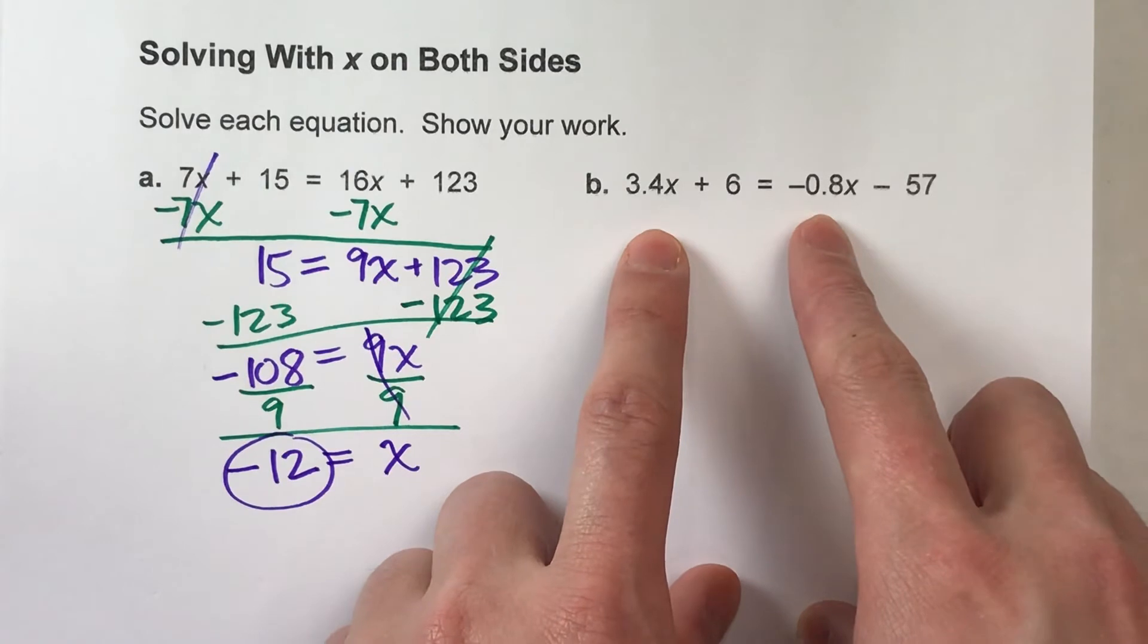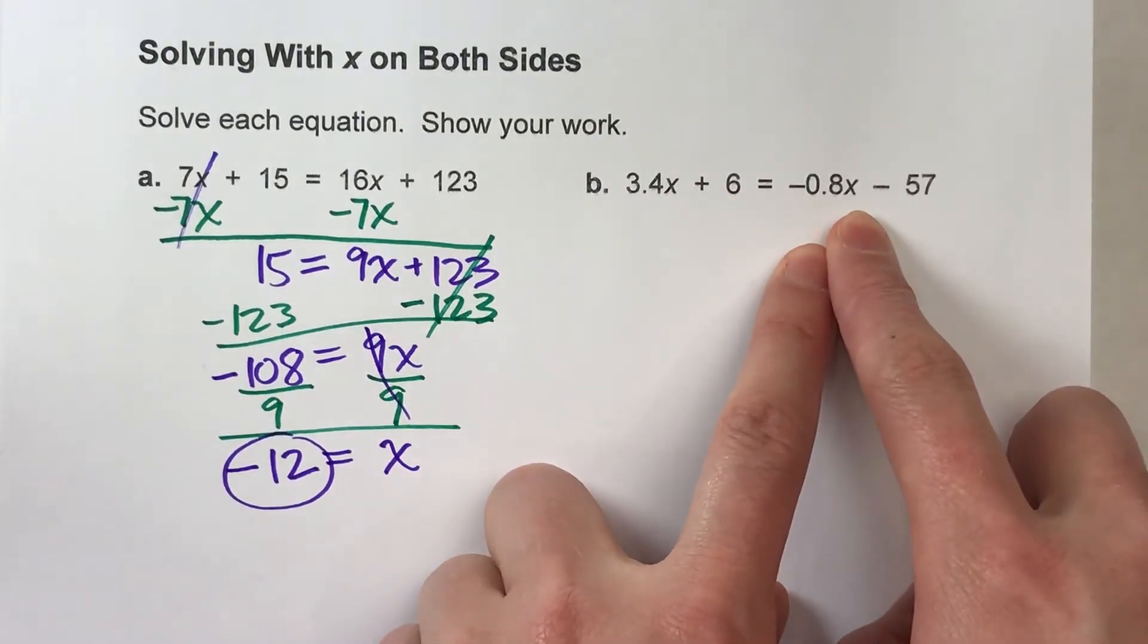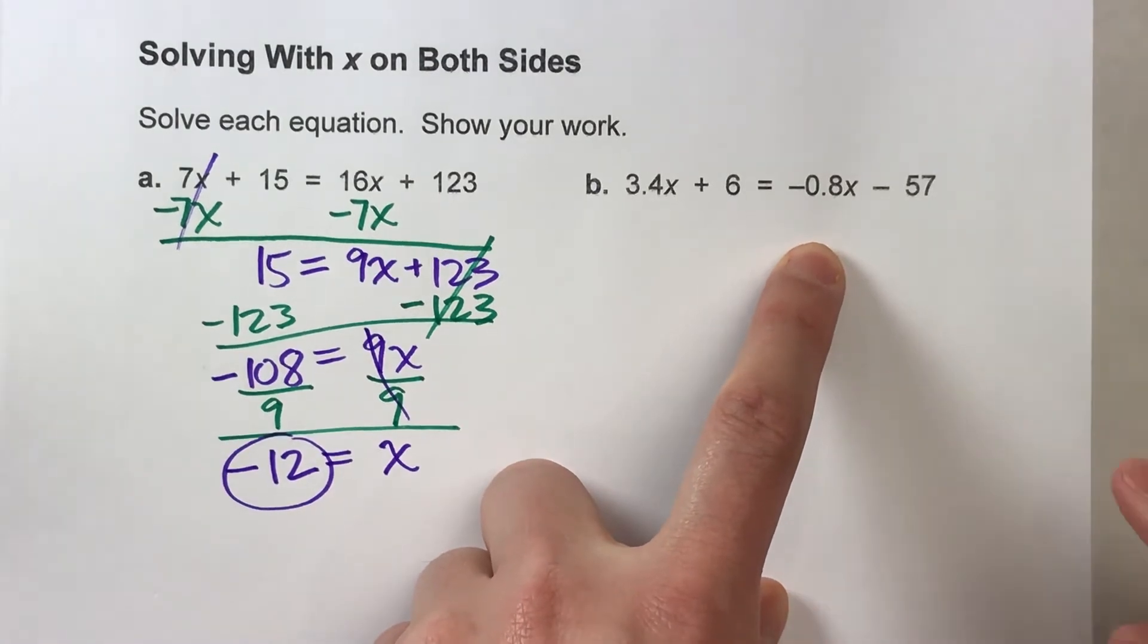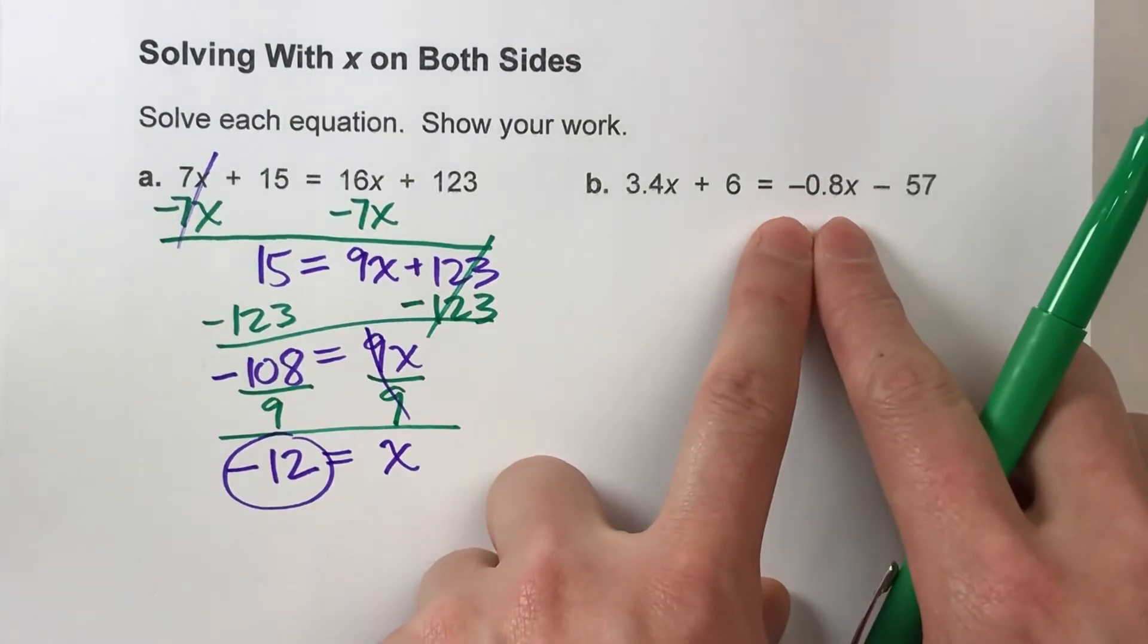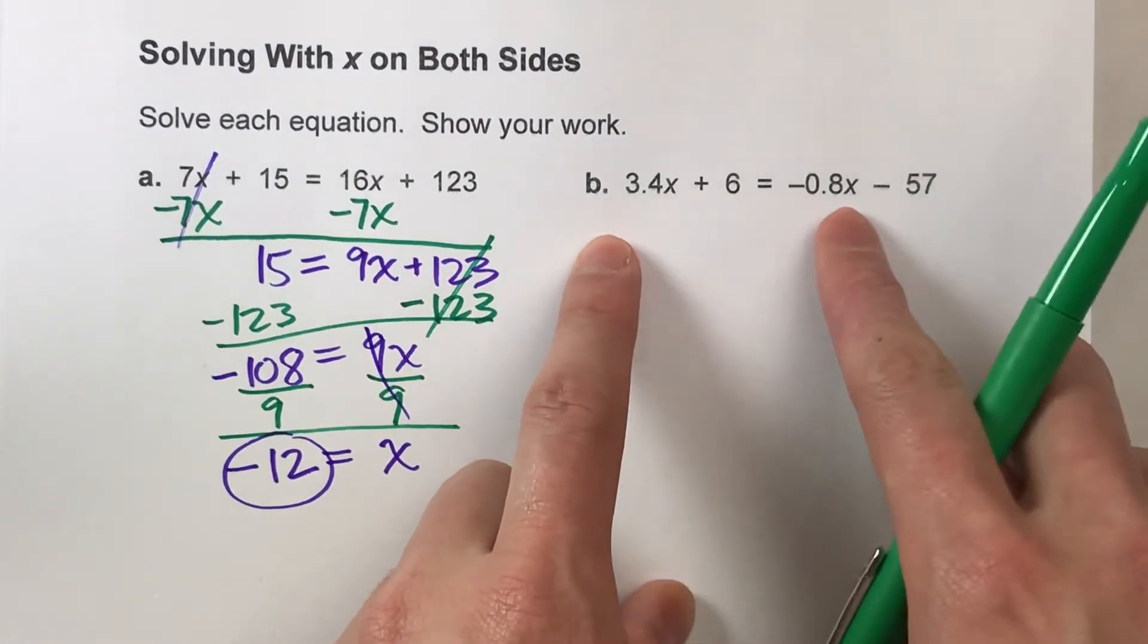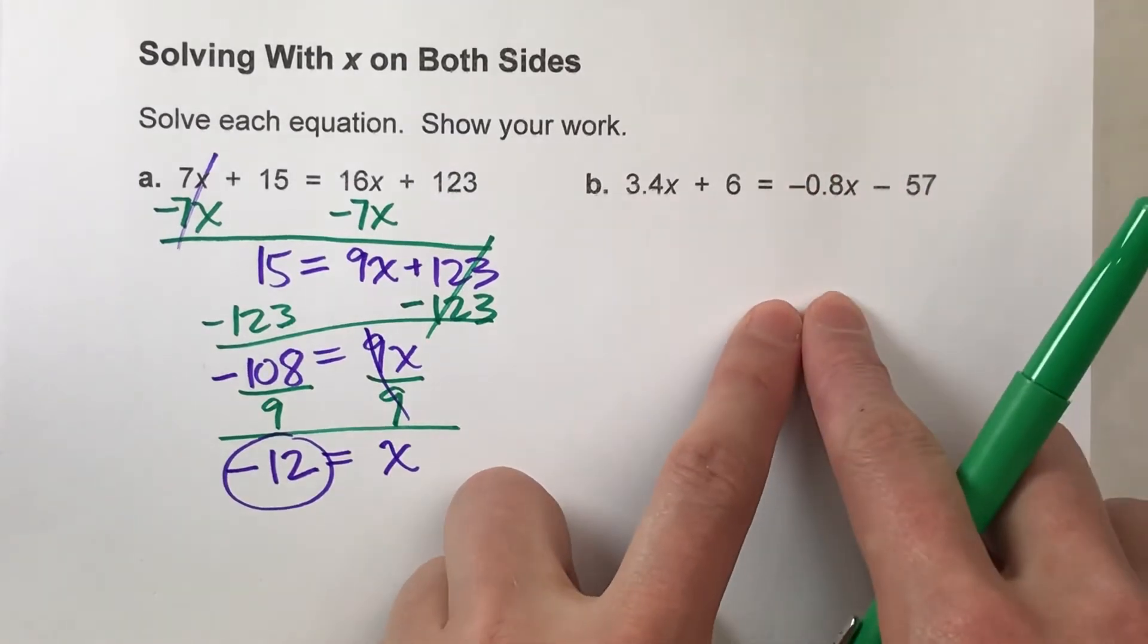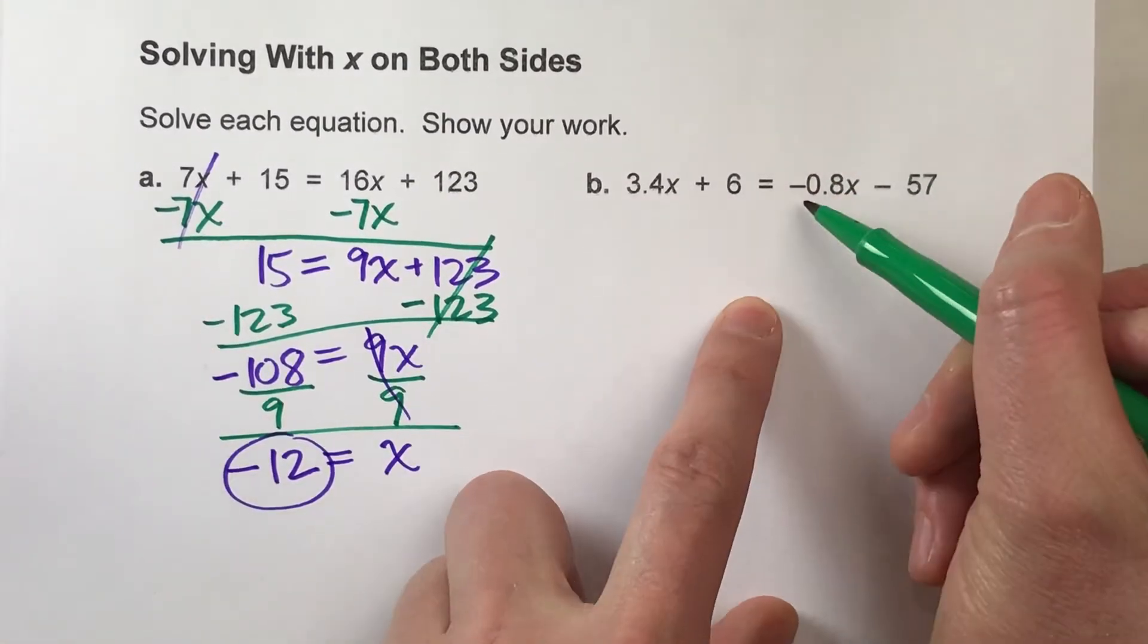So which side do we want to undo first? We've got 3.4x here. We've got negative 0.8x there. If I get to choose, and I do, I'm going to choose to undo this one. The reason being, I could subtract 3.4x on both sides to undo this, but I'm going to end up with a negative amount of x's. But if I was to undo this one, I would add 0.8x on both sides.